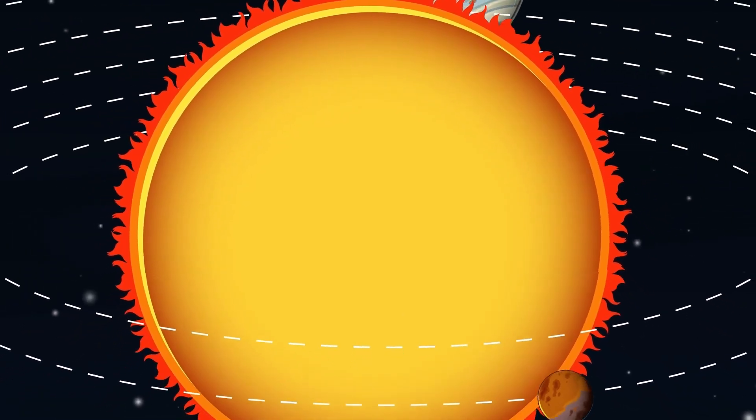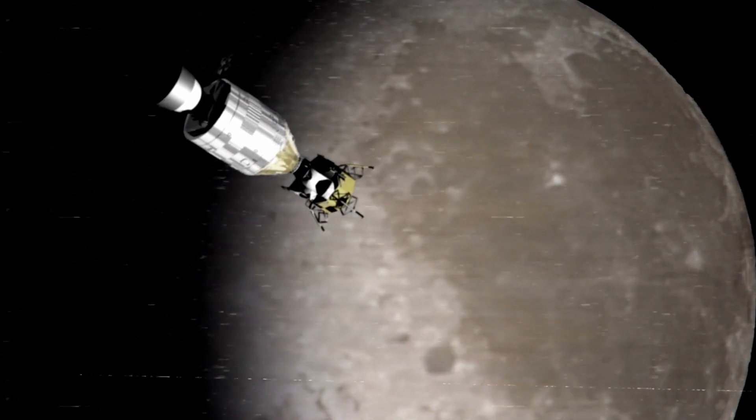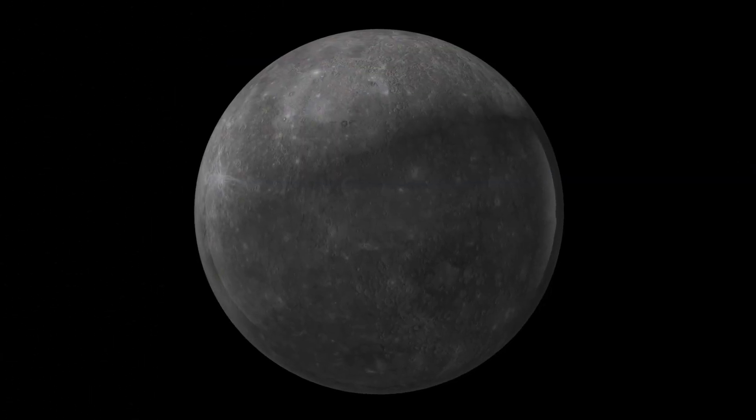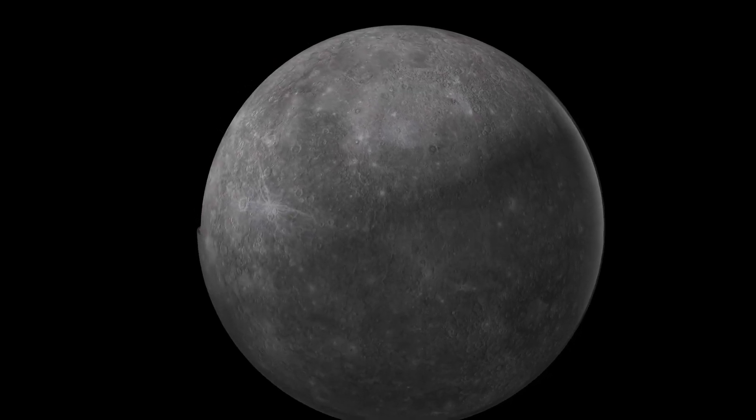This is no comet. And according to data leaked from within NASA and confirmed by multiple independent observatories, this object may be part of a larger system already surrounding us.